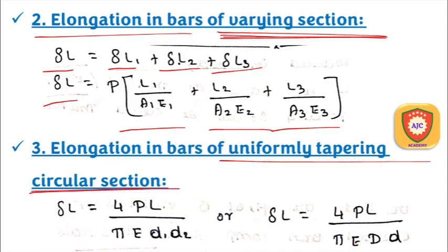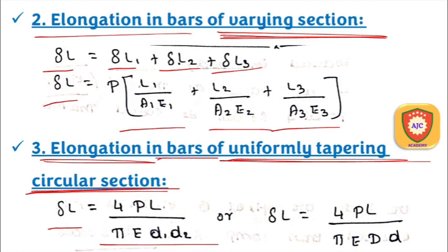For the uniformly tapering circular section, the elongation formula is δl = 4PL / (π·E·D·d), where D and d are the larger and smaller diameters respectively.